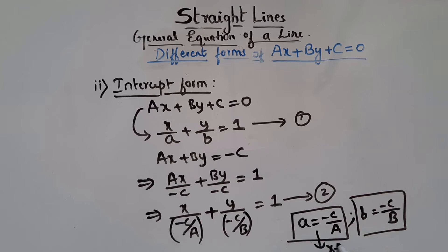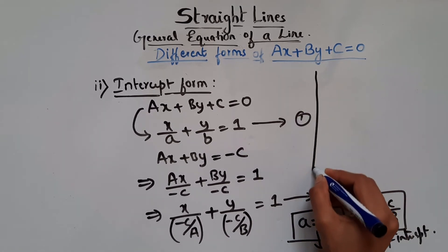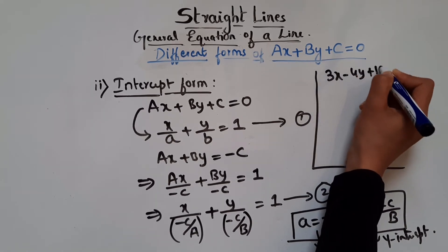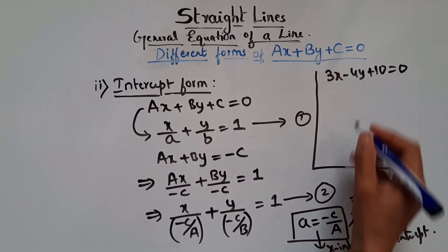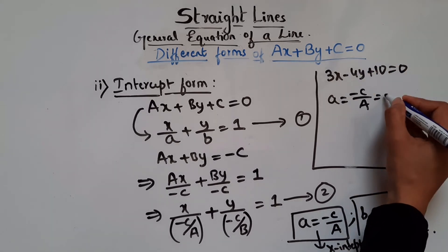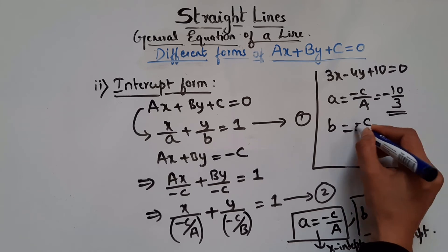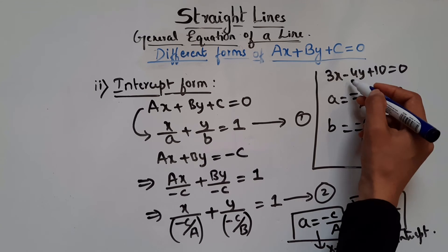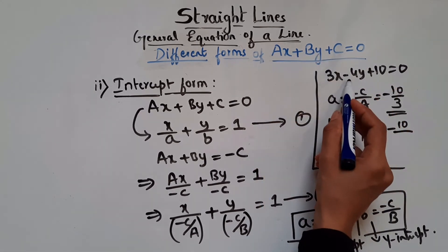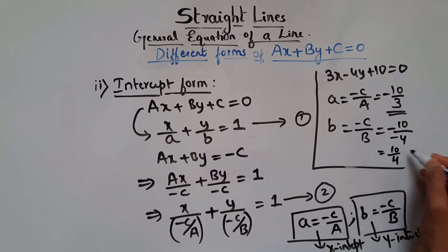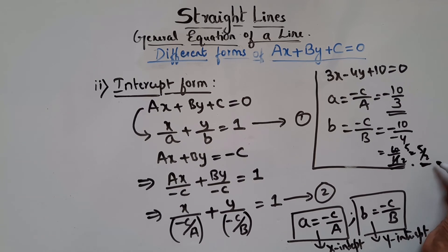For example, given 3x minus 4y plus 10 equals 0, the x-intercept is minus C over A equals minus of 10 — wait, minus C is 10 — so 10 over 3. The y-intercept is minus C over B: minus C is 10 and B is minus 4, giving 10 over minus 4, which simplifies to minus 5 over 2. So using the formulas a equals minus C over A and b equals minus C over B, you can find both intercepts directly.